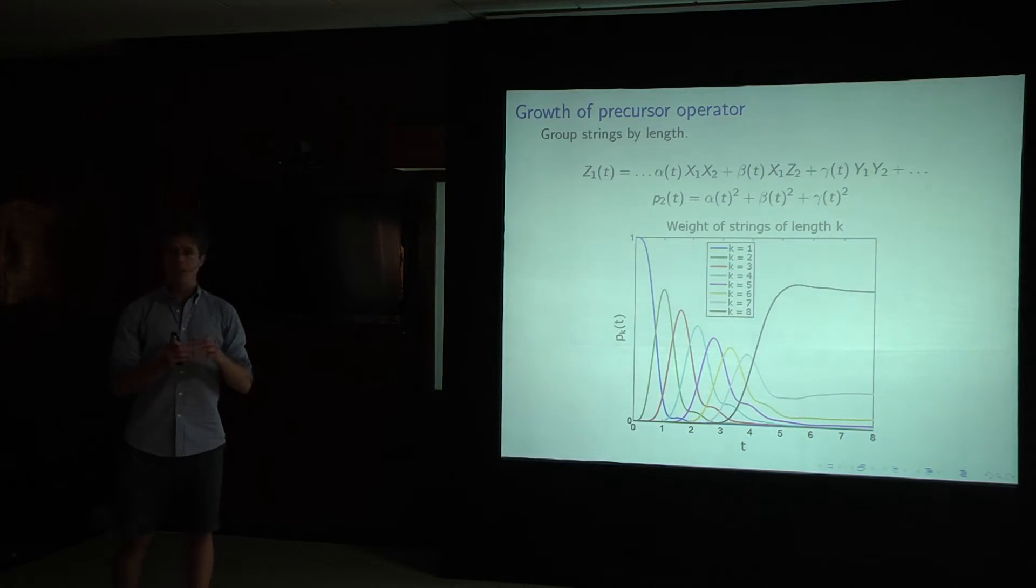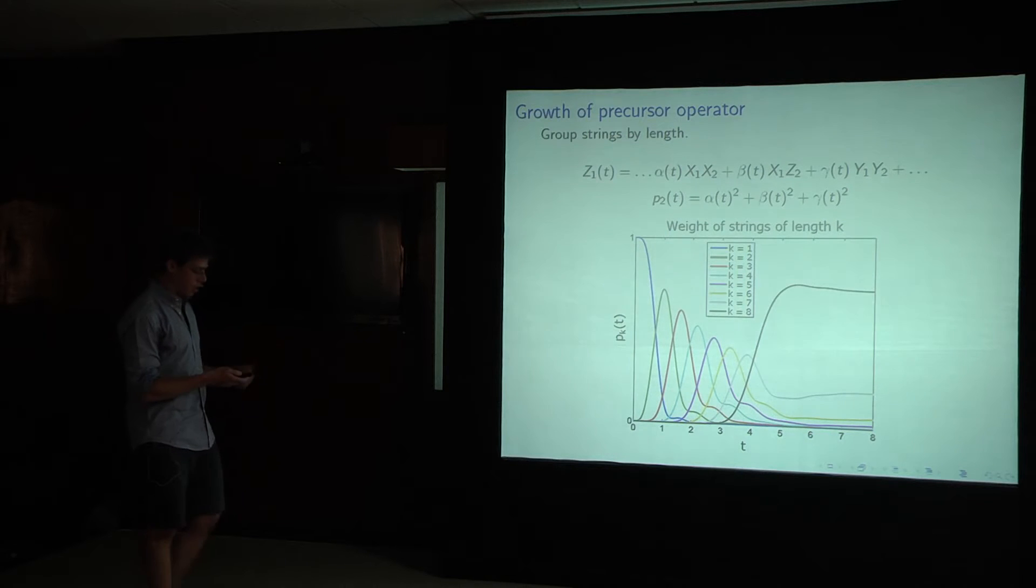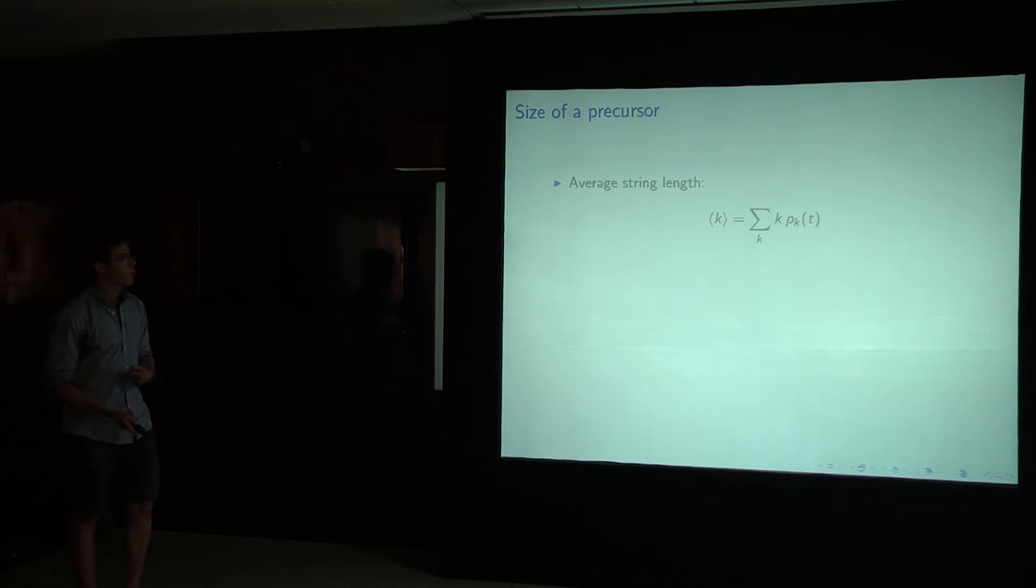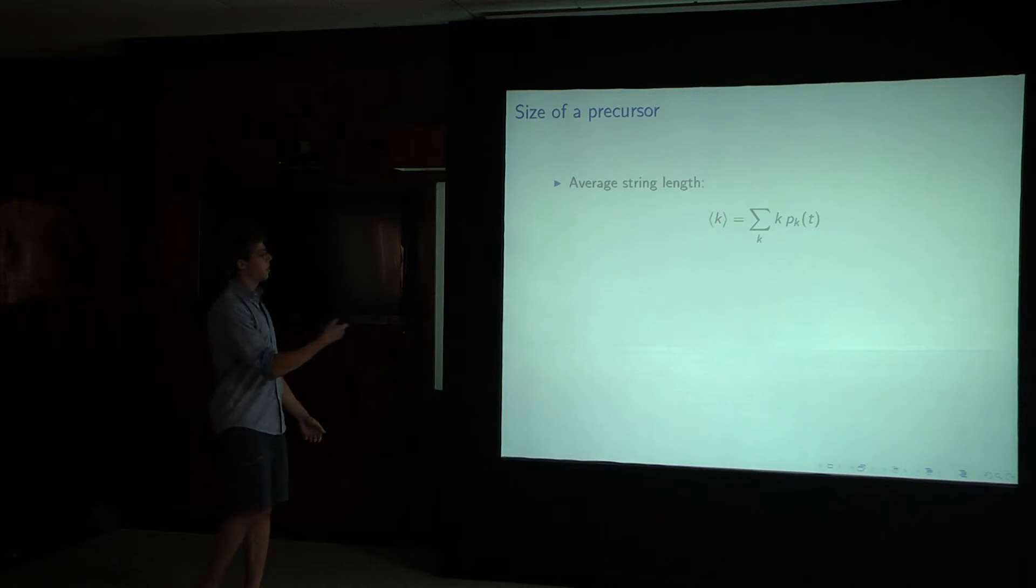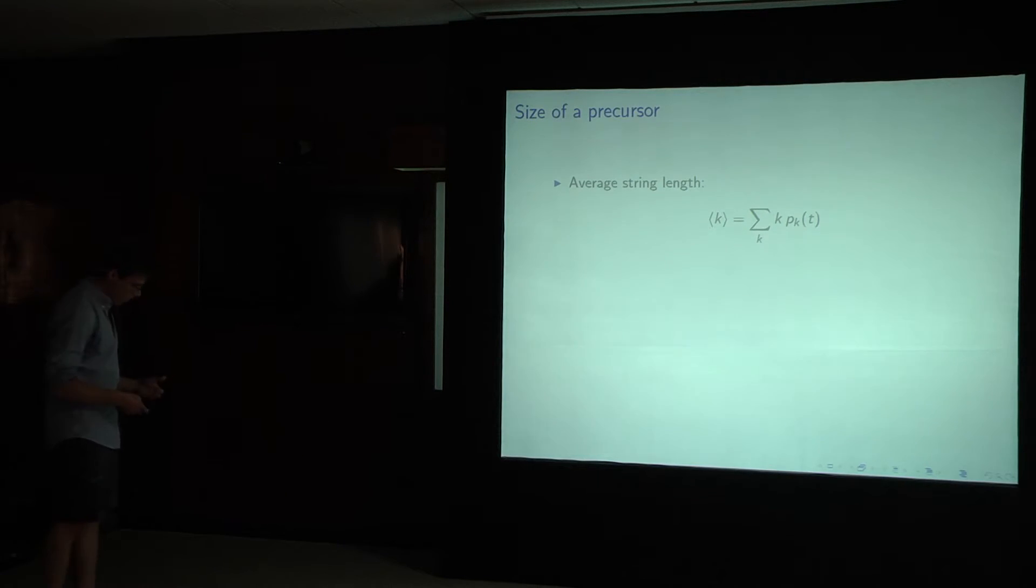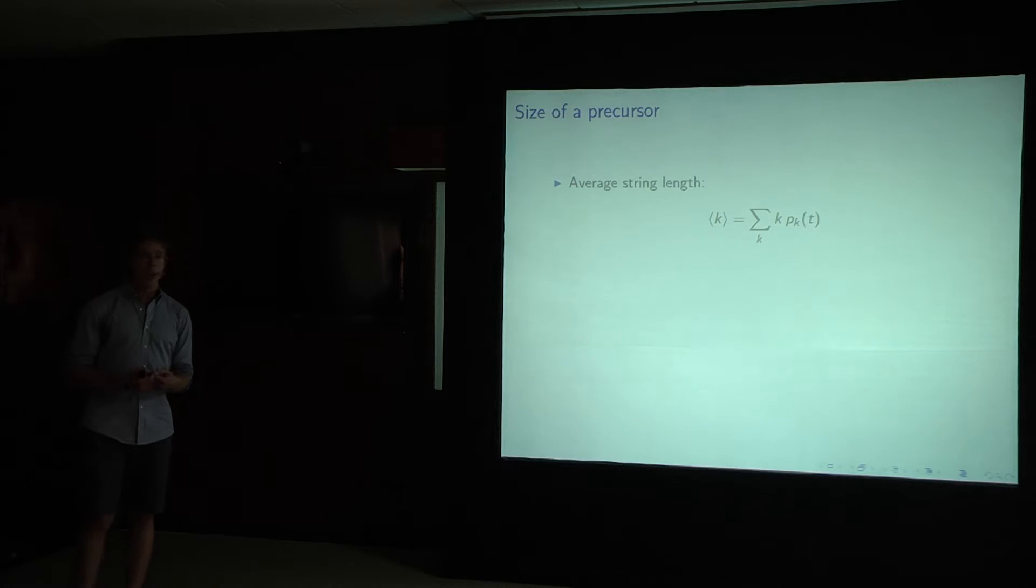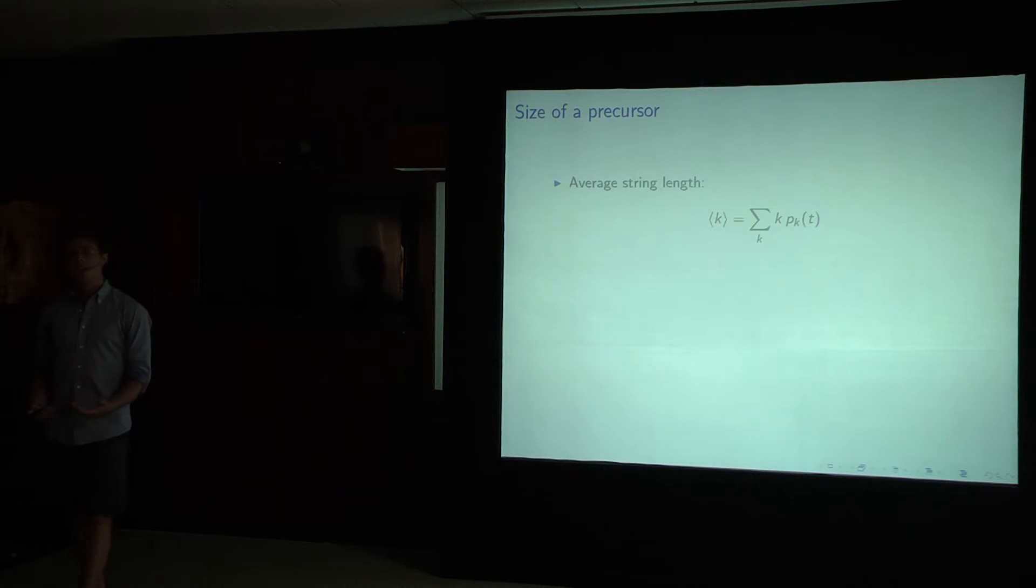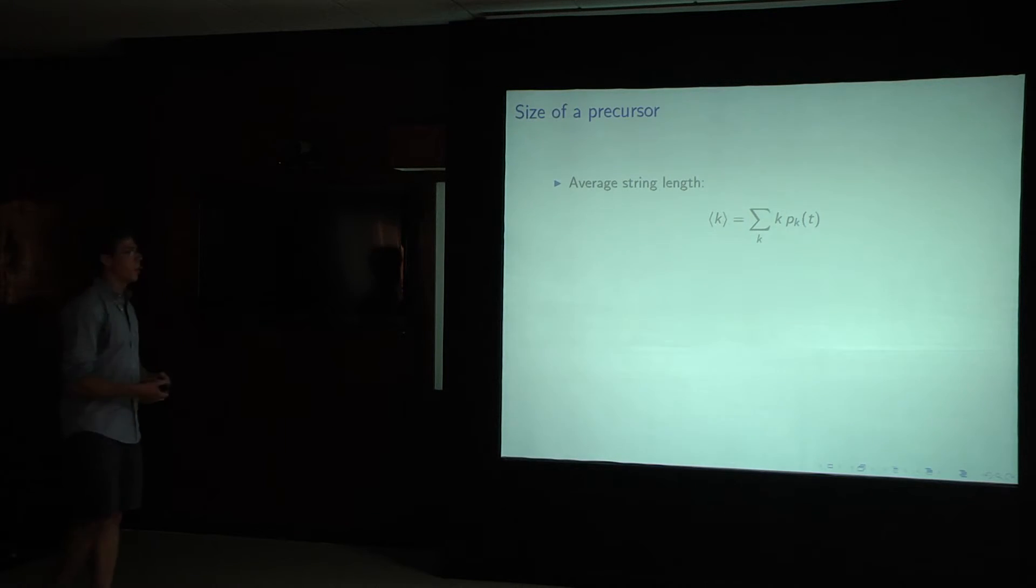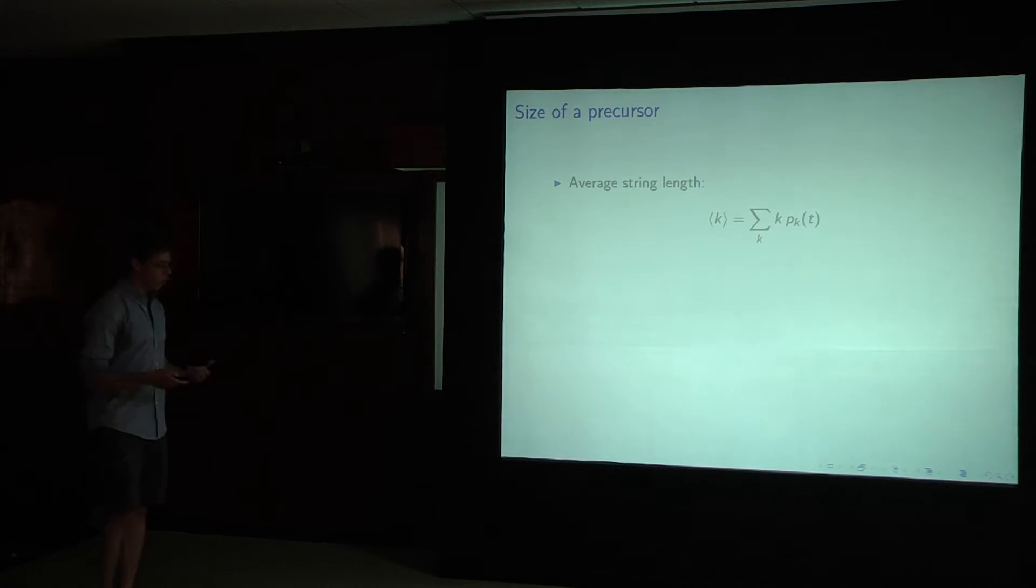So now that we understand that there's this nice picture of this operator of these strings proliferating and growing, what we really want is a measure of size of this precursor. So the natural thing to do is to take the average string length. We take this weight of strings of length k, we multiply it by k, and sum it over all such k, and we get this, you know, the normal average. However, this average is highly dependent on this decomposition into this Pauli string basis, and segregation into strings of different lengths. And as a result, it won't generalize to other settings, for instance, in conformal field theory that we want to study later. What we really want is some way of measuring the length or the size of our precursor.